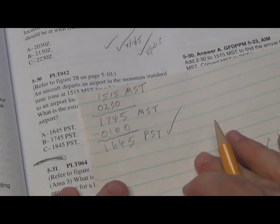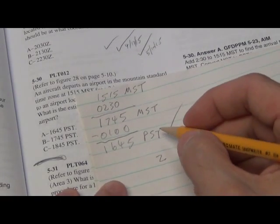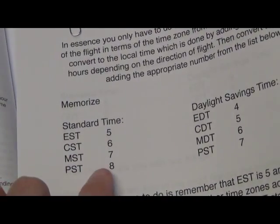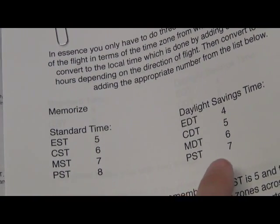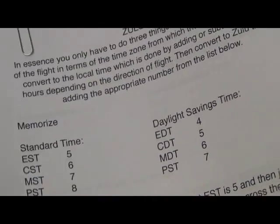Now let's say we wanted to convert that to Zulu time, even though they didn't ask us to. It's very easy. If you go to your chart, Pacific Standard Time, to convert to Zulu, you add 8. If it was Daylight Savings Time, you would add 7. But it's not. It's standard time. So you add 8.